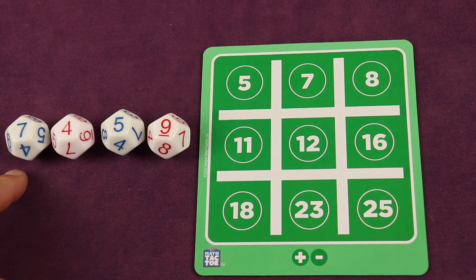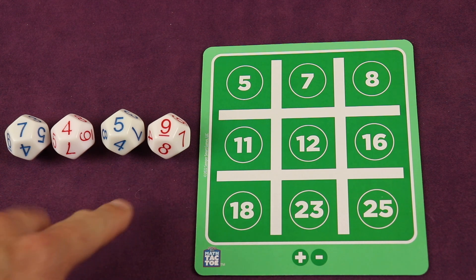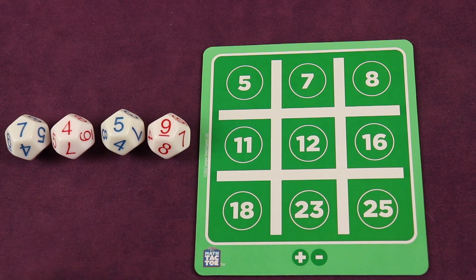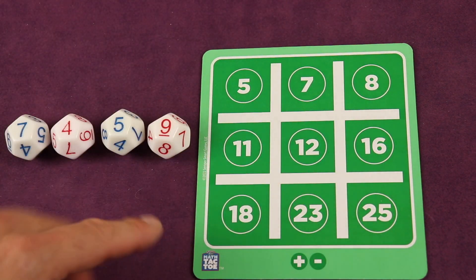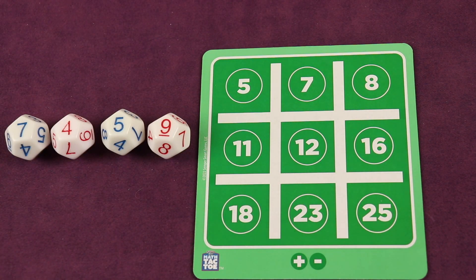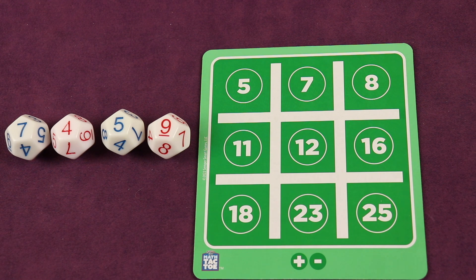Or I could use seven minus four is three, nine minus five is four, add those together—three plus four—and get seven. So you have all flexibility as long as you use at least two numbers and no die more than once. You can do any order of operations using just addition and subtraction in this case. You can do any order and operations to get the number you want.